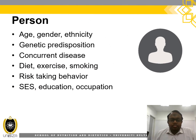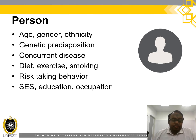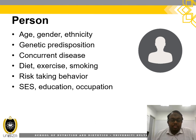Let's look into person. The characteristics of a person that we must look at include: age, gender, ethnicity, genetic predisposition, concurrent disease (whether they have other types of disease at the same time), diet, exercise and smoking behaviour, risk-taking behaviour, socioeconomic status (SES), education, and also occupational status.